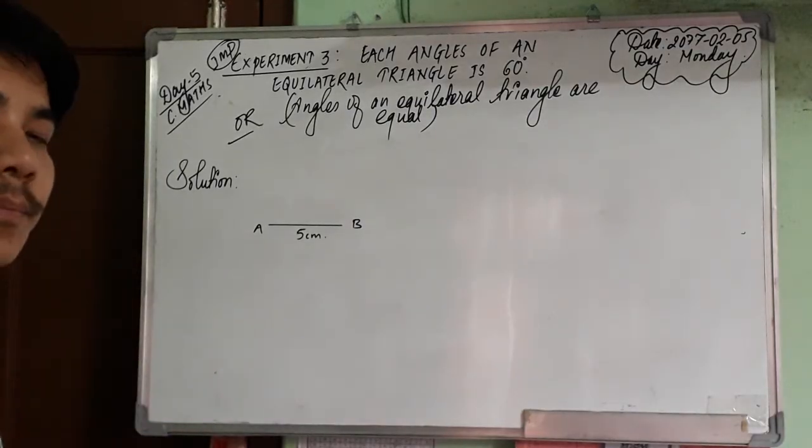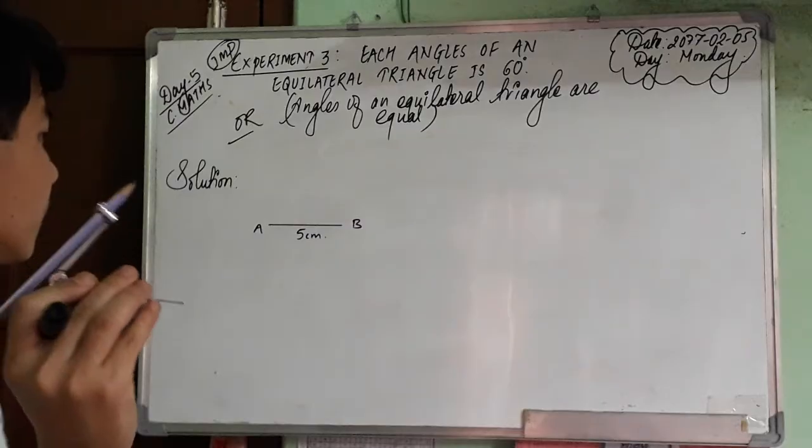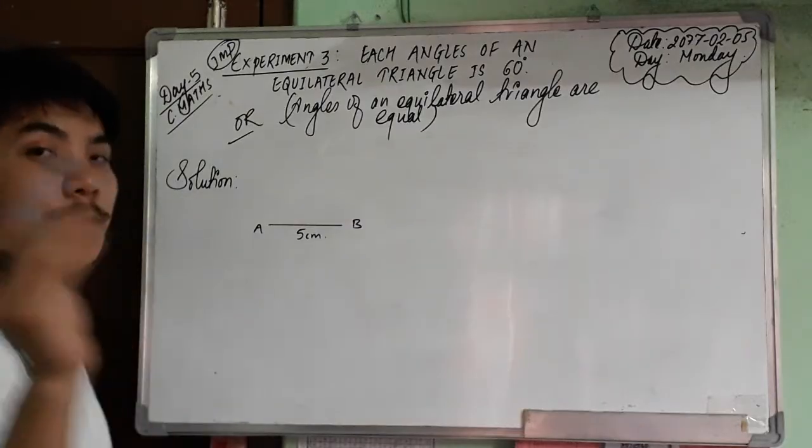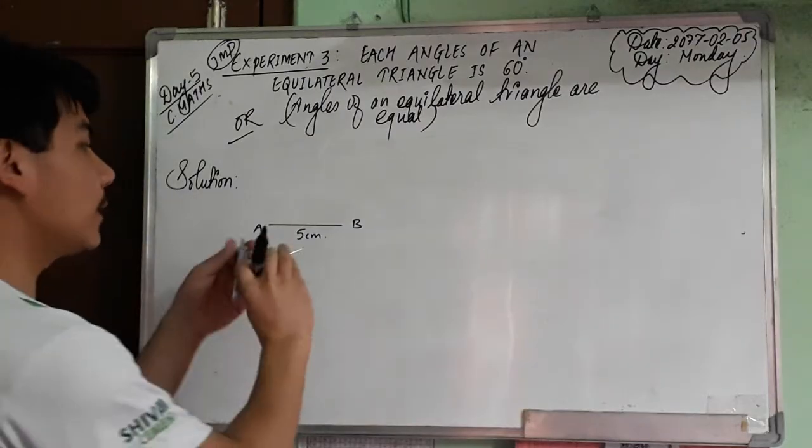Take an arc of 5 centimeters on your compass by measuring this line segment. Line segment AB is 5 centimeters — this is how you set your arc to 5 centimeters.